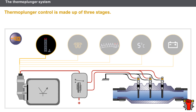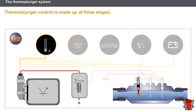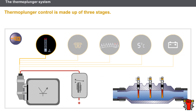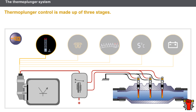For a system fitted with three thermo plungers, the thermo plunger control is made up of three steps: single thermo plunger control for 20 seconds, control of two thermo plungers for 20 seconds, and control of three thermo plungers. Depending on the operating conditions, the thermo plunger control can be interrupted and then restarted following the three stages.